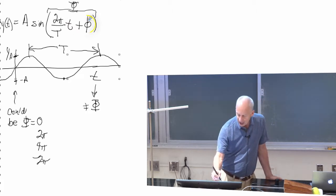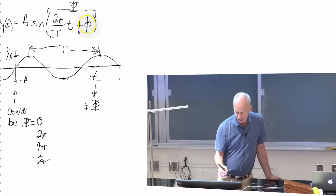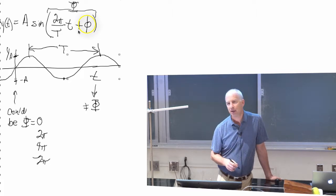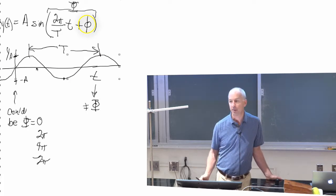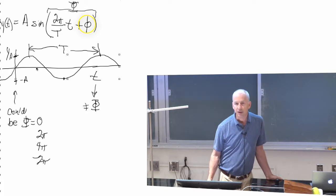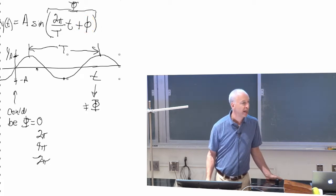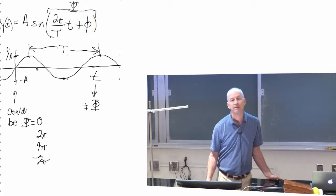And what phi does, this little phi here, is it shifts you around, it shifts the entire graph here to the left or to the right. If I shift the entire graph by two pi in either direction, it makes no difference at all.